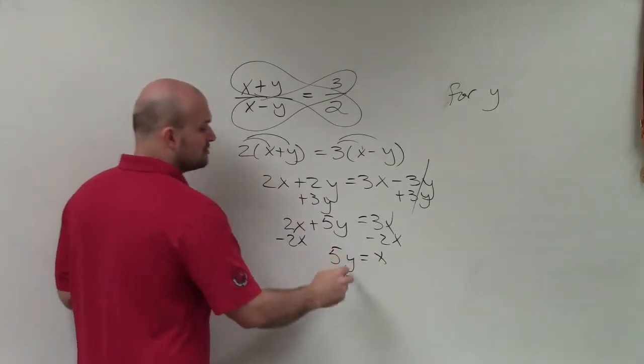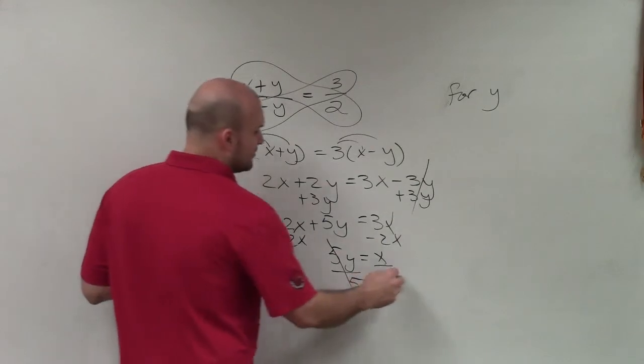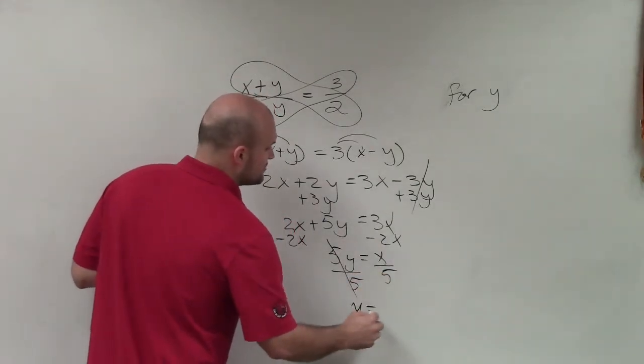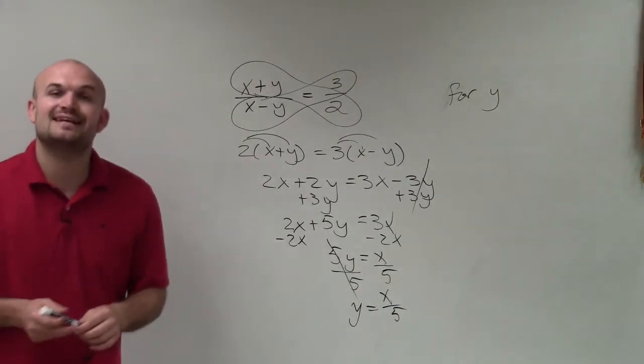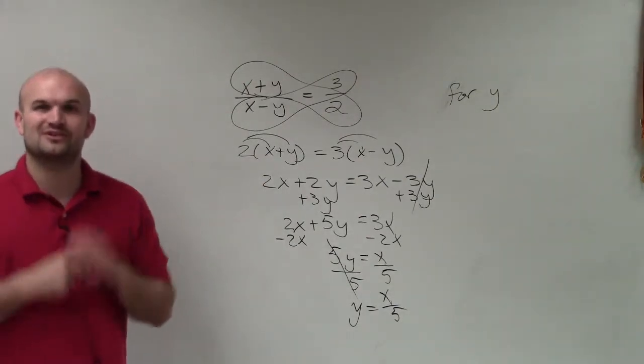Now I undo multiplication of 5 by dividing by 5. That divides to 1. And my final answer is y equals x over 5. So there you go, ladies and gentlemen. That is how you solve for y for the literal equation. Thanks.